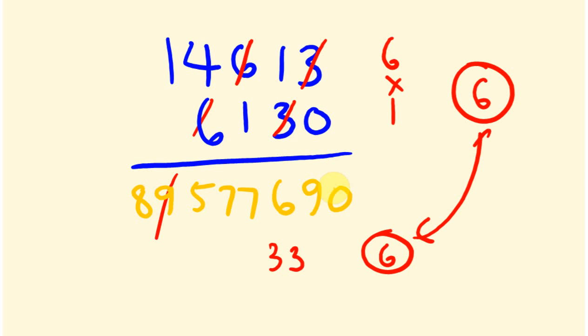So anyway, that's the method of casting out 9s. It's a great method for quickly working out whether your multiplication is likely to be correct. Anyway, we're going to have a look at this in the next video where we're going to be looking at applying this to division, especially long division. Anyway, see you next time. Bye.